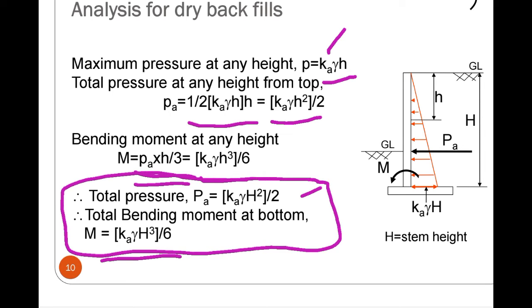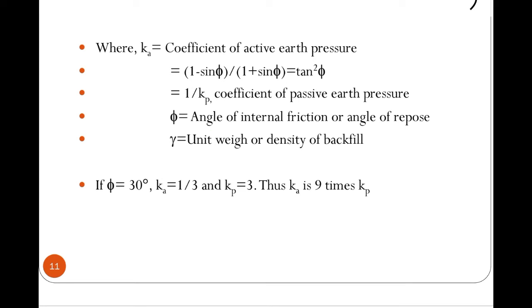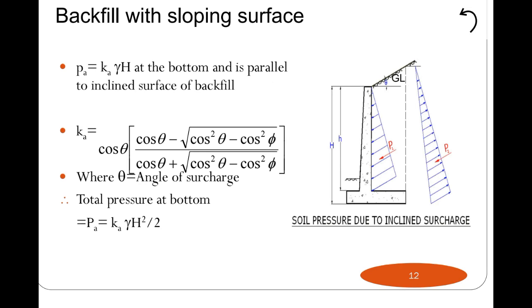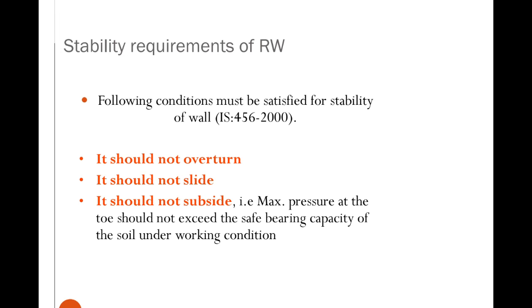Ka is the coefficient of active earth pressure: Ka = (1 − sin φ) / (1 + sin φ) = tan²φ. For passive earth pressure, Kp is the coefficient of passive earth pressure. φ is the angle of internal friction and γ is the unit weight or density of backfill. For example, if φ = 30°, then Ka = 1/3 and Kp = 3, so Kp is 3 times Ka. For a sloping surface, Ka = cos θ × [cos θ − √(cos²θ − cos²φ)] / [cos θ + √(cos²θ − cos²φ)].